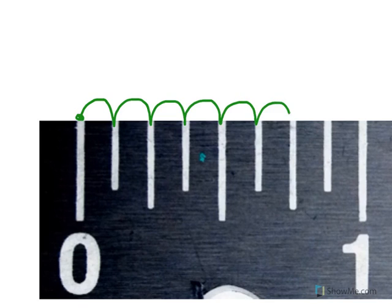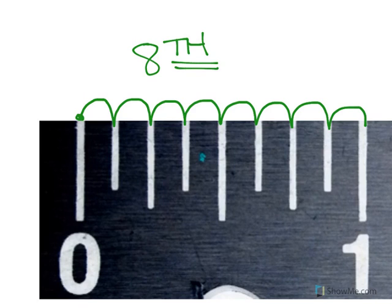Five, six, seven, eight spaces over. So that's why they call this inch divided into eighths. Because there's eight spaces between zero and one.